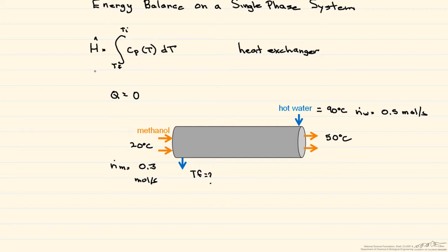What we want to know is what is the final temperature of the water. We're given the heat capacities. The heat capacity of the water is equal to 75.3 joules per mole Kelvin, and the heat capacity of the methanol is given as 75.86 joules per mole Kelvin.